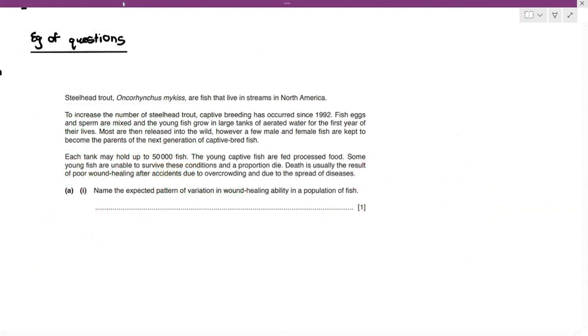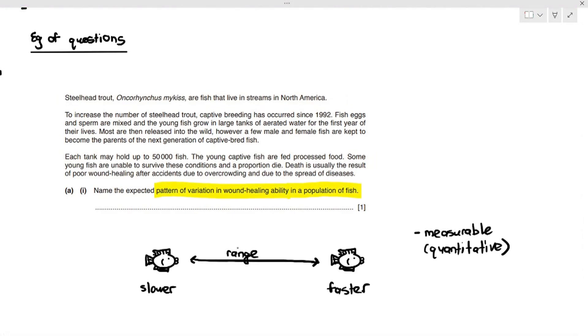An example of questions that we can see over here. To keep things very simple, I'm just going to read through the highlighted part. Steelhead trout are fish that live in streams in North America. They were farming the fish and they put the fish in a tank and each tank may have up to 50,000 fish. The young captive fish are fed processed food. Some young fish are unable to survive these conditions and a proportion die. Death is usually the result of poor wound healing after accidents due to overcrowding and due to spread of diseases. So, because the fish are all in a tight space, they might hit each other and then they might cause injury on the body. Fish that have poor healing abilities, that means their wounds heal very slowly, they will die faster. Fish that heals faster, they will have a higher survival rate. So, name the expected pattern of variation in wound healing ability in a population of fish.